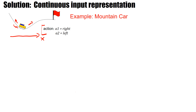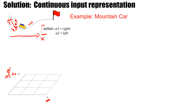The state space relevant for action choices is actually two-dimensional. If the car is at a given position, it matters whether it's currently moving upward or downward. If moving upward, you'd want full power to the left to gain more height; if moving downward, you'd want full power to the right. So the input space is two-dimensional: one coordinate is position, and the other is the momentary speed (derivative). Suppose we discretize each dimension into three values, giving nine different states.